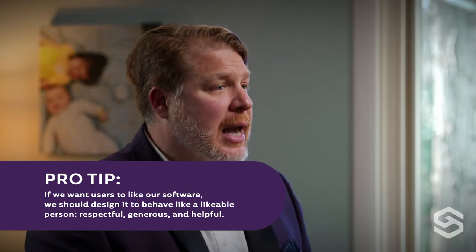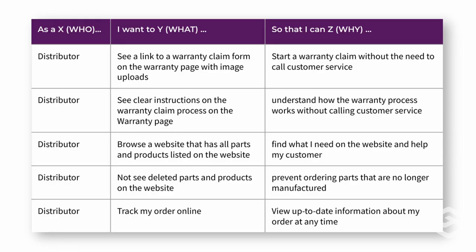You can capture or inventory this however you prefer, but I recommend starting with a number cruncher's favorite invention: a spreadsheet. Let's map the who, what, and why to the following format: 'As an X, I want to Y, so that I can Z.'